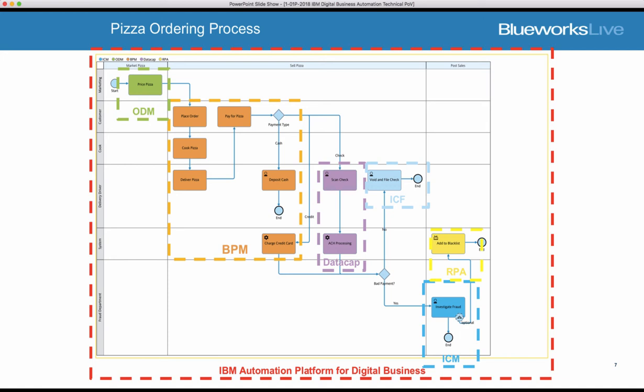Sometimes customers write a check without having the money in their account, and so the ACH will return an error as a bad payment type. In that case, I need to pass off this order to the fraud department to investigate whether this is an intentional situation or an accident. Investigating a fraud case often comes with a lot of variability — in this diagram everything flows a consistent, repeatable way, but oftentimes investigations are not this linear and structured.